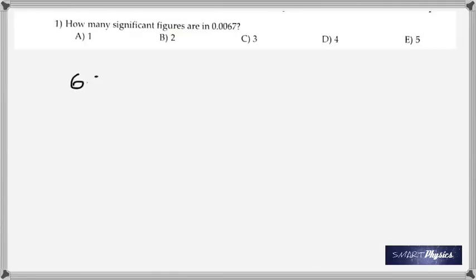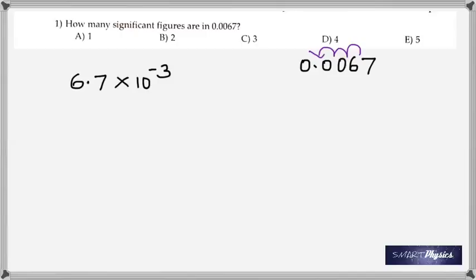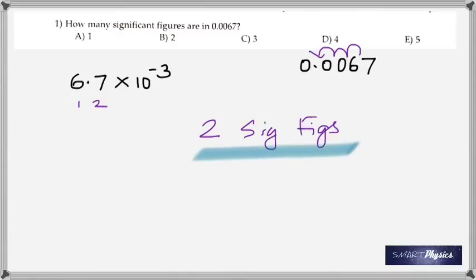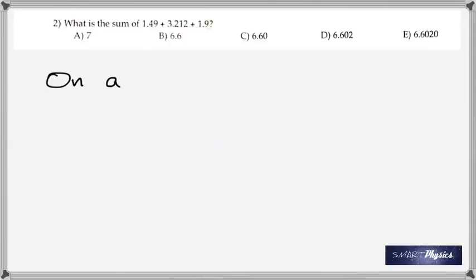Here are the answers to the quiz given today. First one: how many significant figures are in 0.0067? Write it in scientific notation — to bring the decimal after the first number you move it 1, 2, 3 places to the left — so it's 6.7 × 10⁻³, which means there are two significant figures.